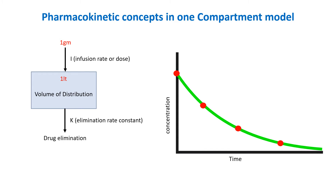The volume of distribution represents the size of the compartment into which the drug distributes. Since the compartment is 1 liter and the drug dose is directly injected into it, the initial concentration is simply the dose divided by the volume. So in this case, 1 gram per liter of drug is confined to this one single liter of body fluid.